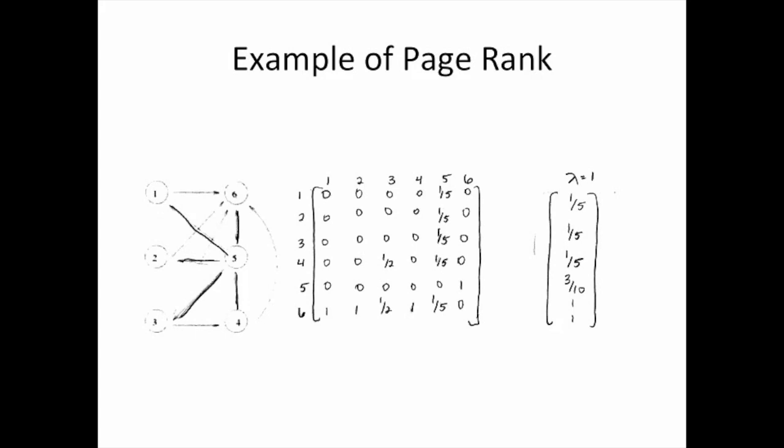Here we have link five and link six with the highest values. So those are the two most important links in this map, because their values in this eigenvector are one and one.